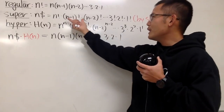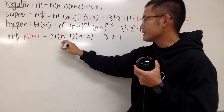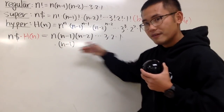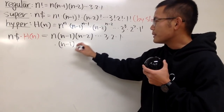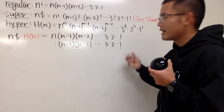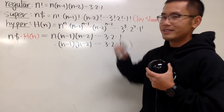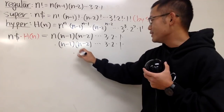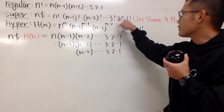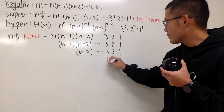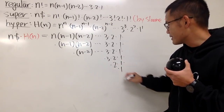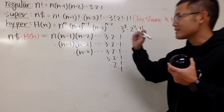We still have to include the n minus 1 factorial, so we multiply by n minus 1 times n minus 2 times dot dot dot times 3 times 2 times 1. Then the n minus 2 factorial: n minus 2 times dot dot dot times 3 times 2 times 1. And of course we continue all the way down to 3 factorial, 2 factorial, and 1 factorial. So it looks like a little triangle of numbers.